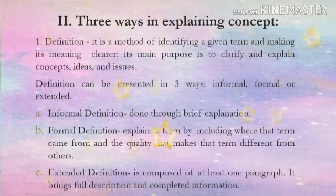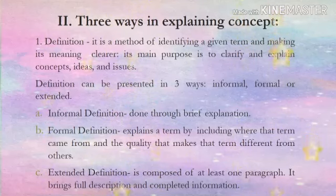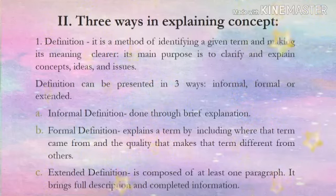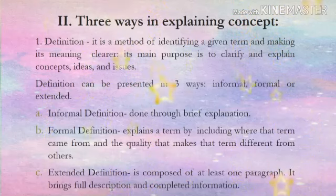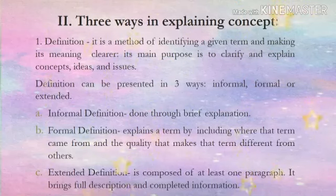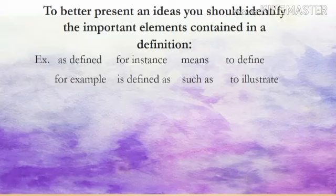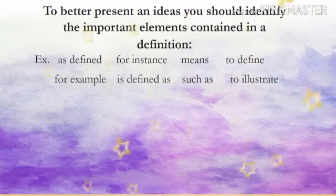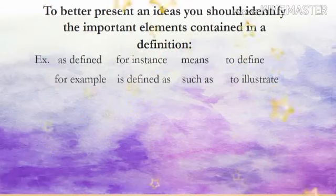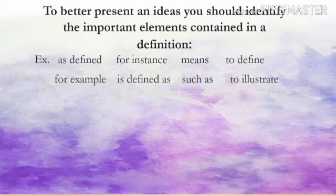Informal definition is done through brief explanation. Formal definition explains a term by including where the term came from and the quality that makes that term different from others. And the last one, extended definition, is composed of at least one paragraph. It brings full description and complete information. To better present an idea, you should identify the important elements contained in a definition. For example, signal words such as: as defined, for example, for instance, such as, to define, to illustrate.